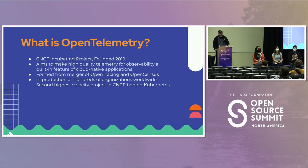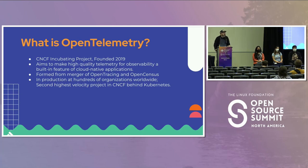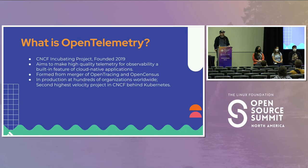We merged from Open Tracing — I was an Open Tracing maintainer — and we merged with Open Census, which was a Google open source project with very similar aims. Since then, we've actually deprecated Open Tracing and Open Census. So we've managed to create fewer standards in the open source world rather than more, which doesn't happen that often. We're in production at hundreds of organizations worldwide and have the second highest velocity in the CNCF behind Kubernetes in terms of contributors and pull requests.